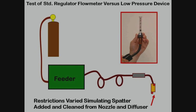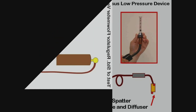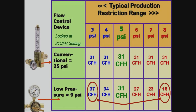By looping the gun cable and blocking one of the gas diffuser ports, the results showed a conventional flow meter maintained the same preset 31 cfh over the range of restrictions tested. Flows with the low-pressure Surge Guard device varied from 16 to 37 cfh. The flow-indicating pressure gauge did not show the changes. The device operated at only 9 psi — well below the 25 psi needed to achieve automatic flow compensation.